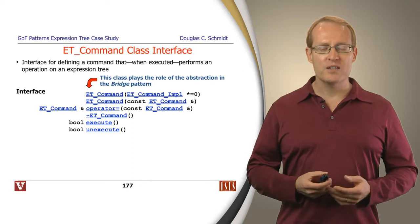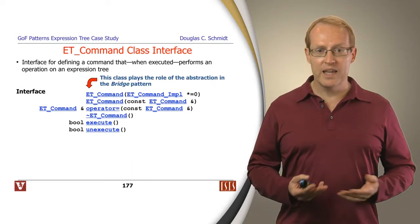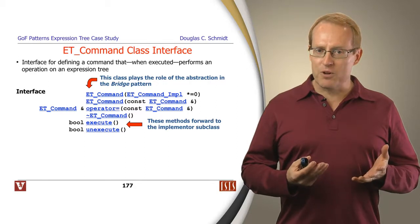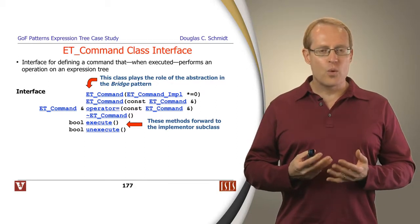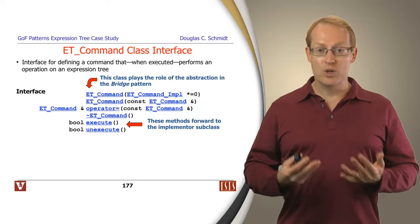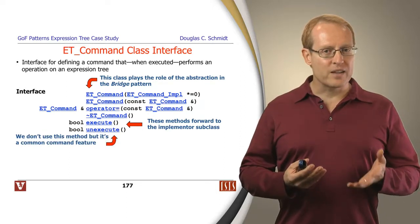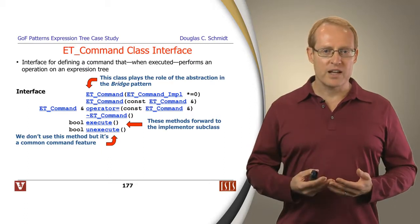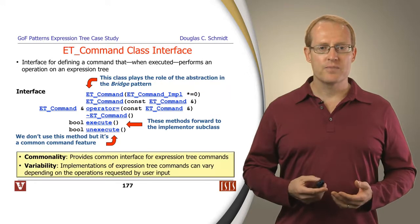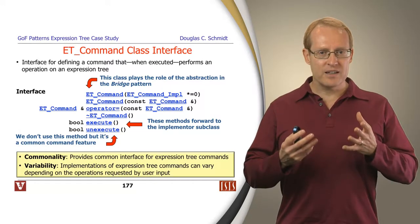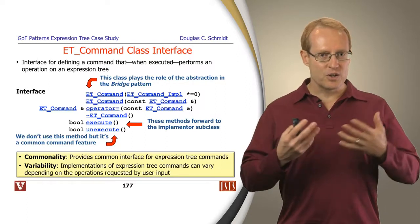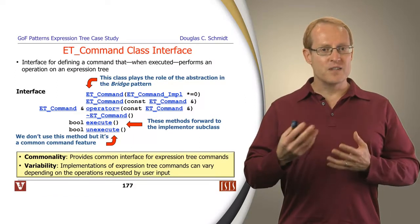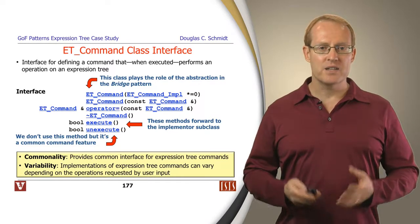If you take a look at the interface, this class plays the role of the abstraction in the bridge pattern — it provides an interface that the outside world and the client sees. There are methods like execute and unexecute which forward to the underlying implementation. It's worth noting that this particular case study doesn't actually use unexecute, but many uses of command do in fact use it in order to undo and redo operations. This command interface provides a single means to access commands on the expression tree, and can delegate to different implementations that handle different kinds of commands in a common way.